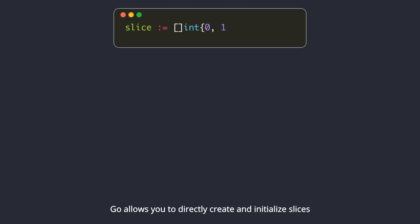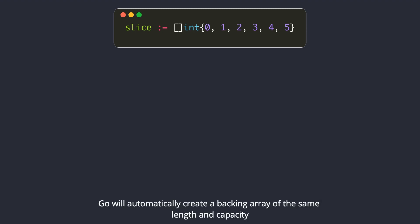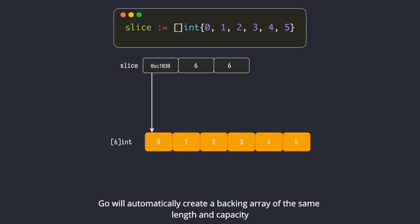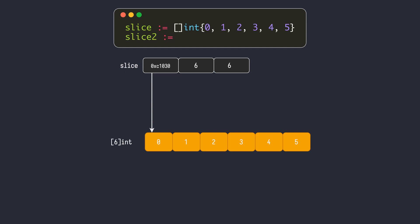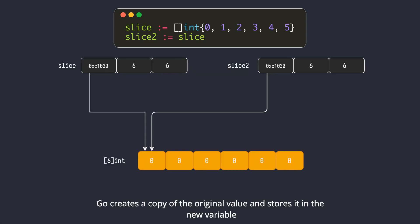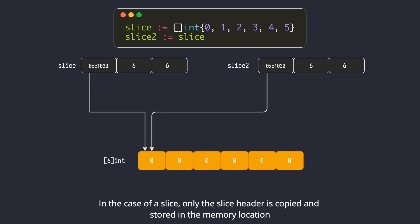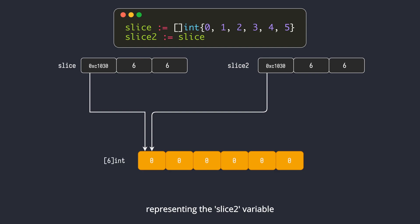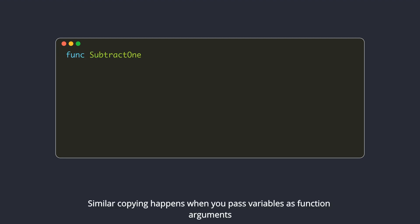Go allows you to directly create and initialize slices. When you do this, you are not explicitly creating an array — Go will automatically create a backing array of the same length and capacity. When you assign a variable to another variable, Go creates a copy of the original value and stores it in the new variable. In the case of a slice, only the slice header is copied and stored in the memory location representing the new slice variable.